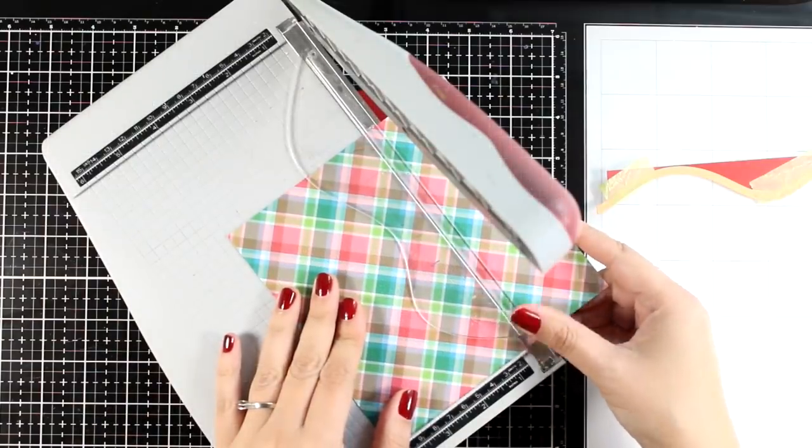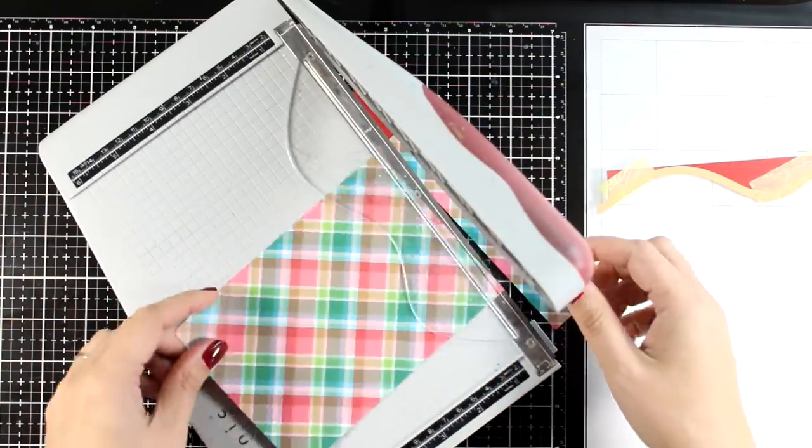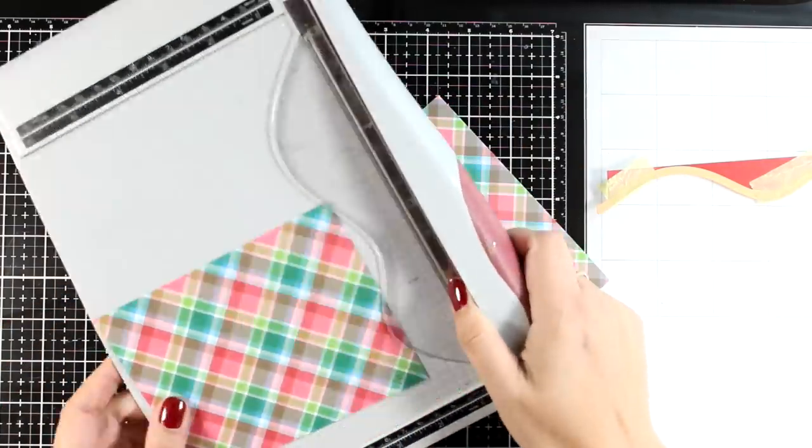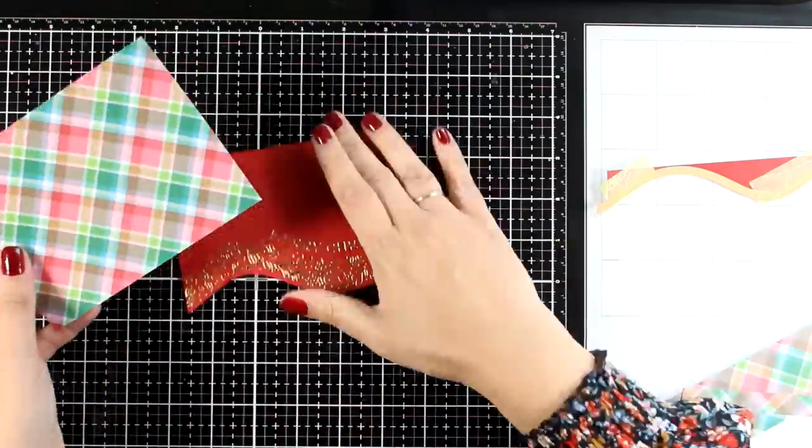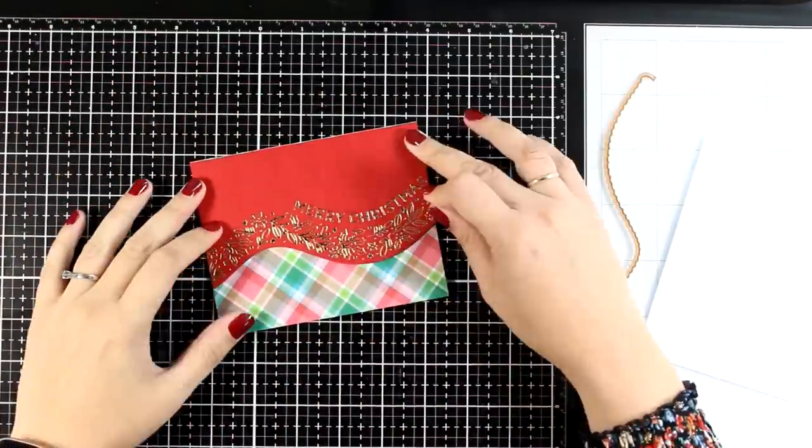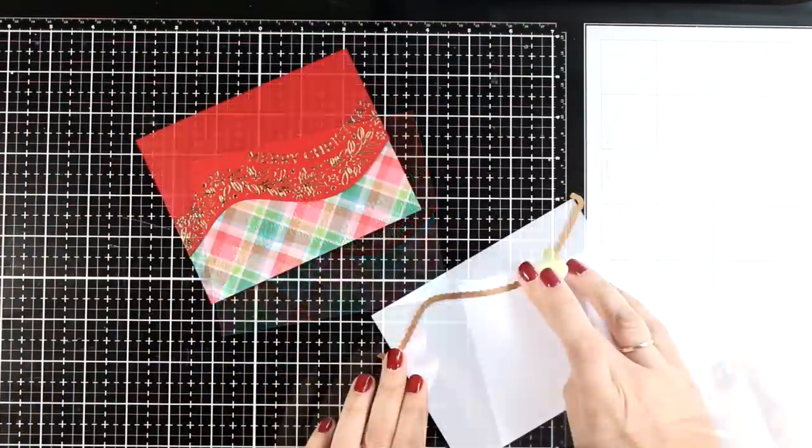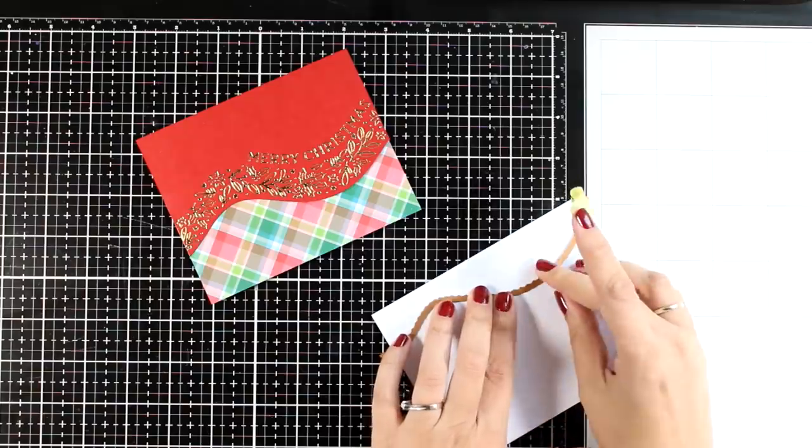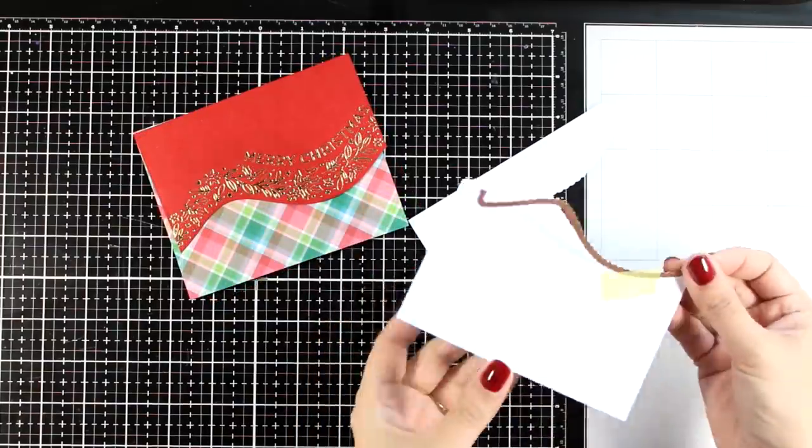Now grab any Christmas pattern paper that you have. If it has a little bit of red that matches the red of your cardstock, then it's even better. I decided to go with this one, this is from a pad by My Favorite Things.